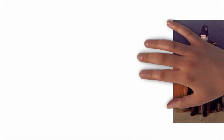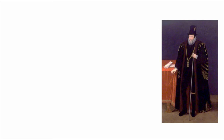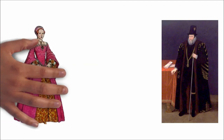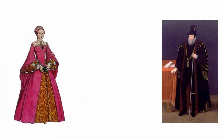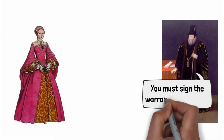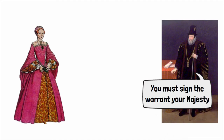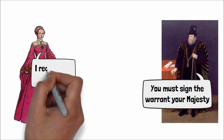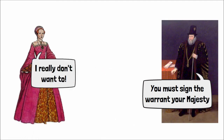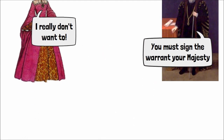The warrant for Mary's execution had been presented to Elizabeth to sign several times in the previous eight years, but every time she had delayed. Now with the evidence from Walsingham and the real threat of invasion from Spain, Elizabeth was left with no choice.